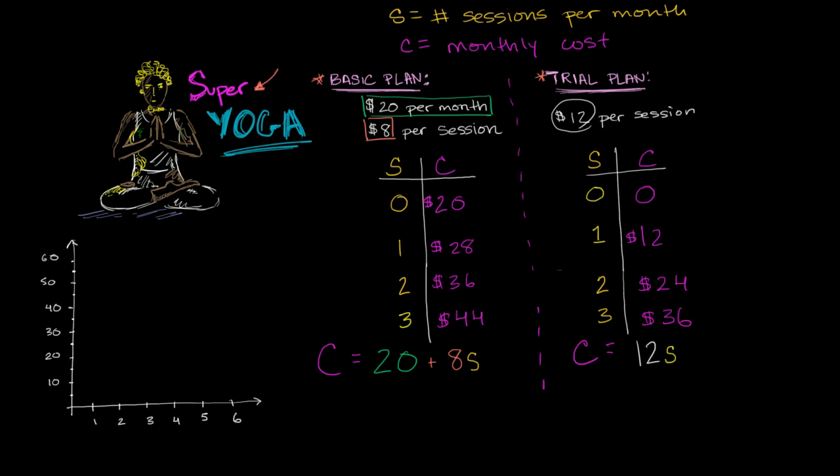We were able to already answer some interesting questions about the different plans at the super yoga studio using the equations we set up. But I'm a very visual guy, and I want to make sure that I analyze the problem fully before I spend my hard-earned dollars. What I want to do now is see a visual representation for the relationship between how many sessions I attend and how much it's going to cost me.